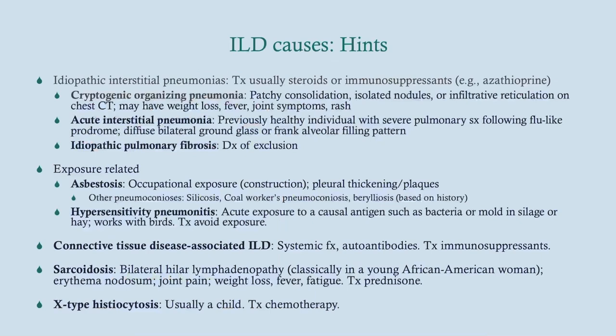Idiopathic interstitial pneumonias include cryptogenic organizing pneumonia, which used to be called BOOP. There's also acute interstitial pneumonia, which tends to occur in healthier individuals who get a flu-like prodrome and present very suddenly. Then there's idiopathic pulmonary fibrosis, which is a diagnosis of exclusion after all other causes are excluded. Exposure-related causes require careful history-taking — what does the patient do for a living? Asbestosis is an occupational exposure that we're seeing less and less since regulations tightened in the 1980s.